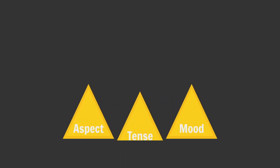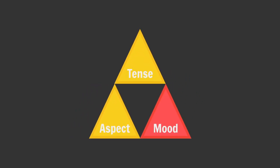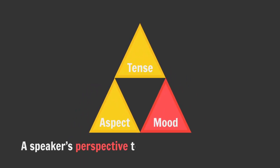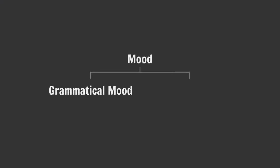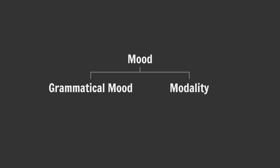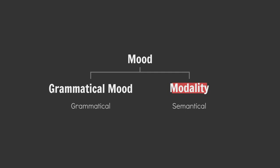Mood differs from aspect and tense in that it expresses a speaker's perspective toward what they are saying. The term mood is often used to refer to both grammatical mood and modality, two similar yet subtly different ideas. Grammatical mood is the grammatical expression of various modalities. Modality is the meaning conveyed by those grammatical expressions. For now, let's focus on modality.